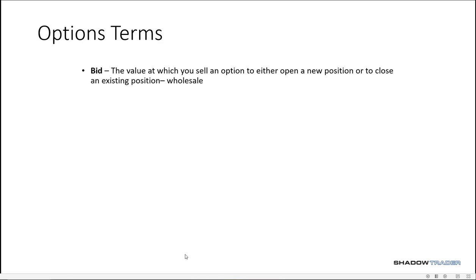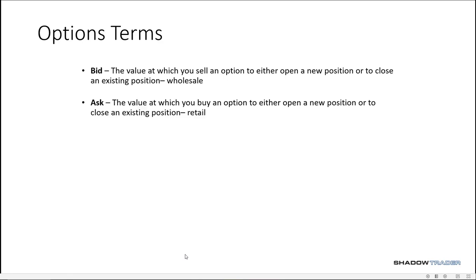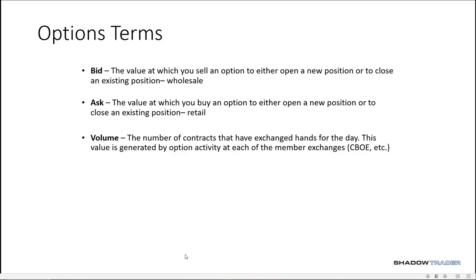Let's talk about some option terms. The bid — this is the value at which you sell an option, either to open or close a position. You can think of this as the wholesale price. The ask — if we've got wholesale, we also have retail. This is the value at which you're going to buy an option, either to open or close a position. Volume — these are the number of contracts that have exchanged hands. You always have a buyer and a seller. This is generated by option activity at various member sites.